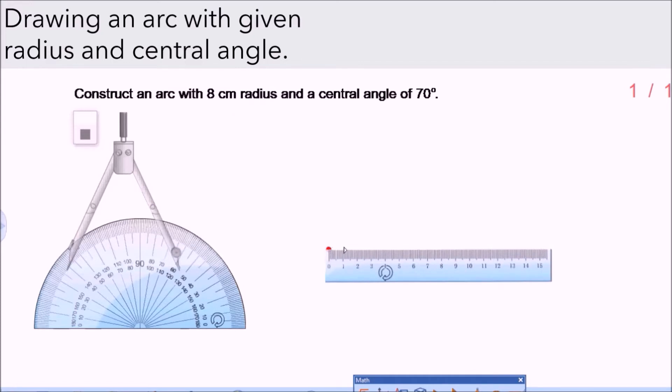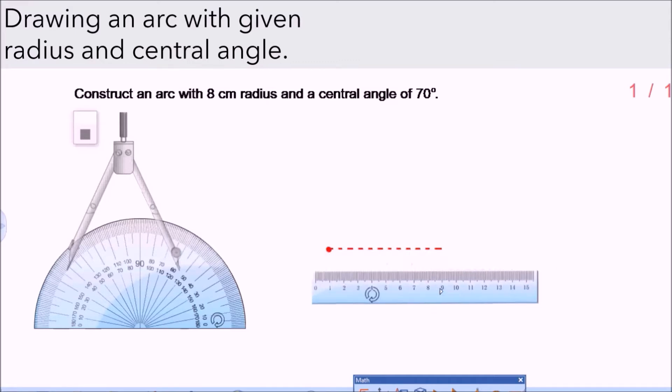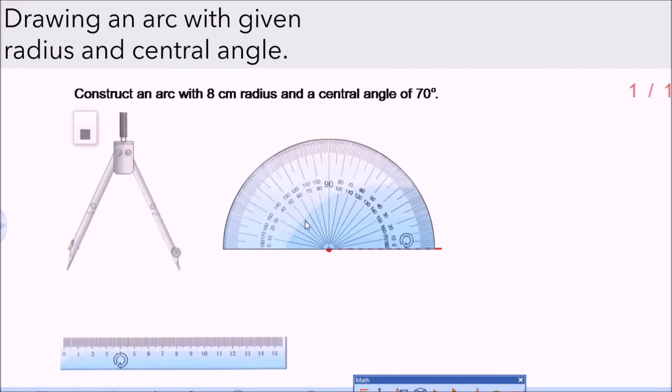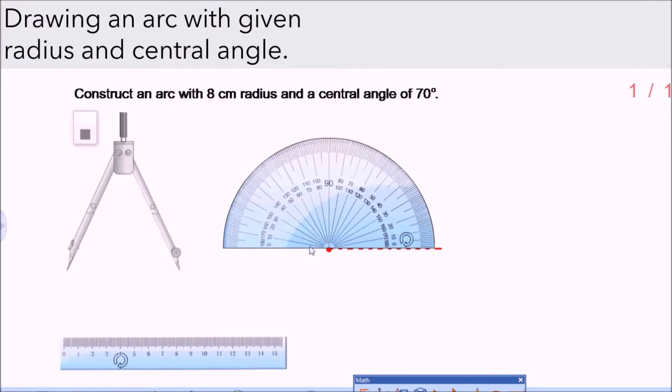First use the ruler. You can measure the first radius of eight centimeters, so you will draw the first dotted line eight centimeters. Then use your protractor to measure the 70 degrees. When you use your protractor make sure that the center of your protractor is on the dot here. Then use the outer scale because that's where zero is on the line, and go 70 degrees. Mark that angle.